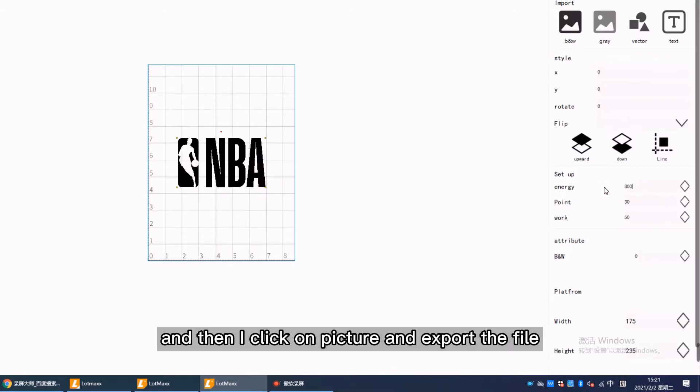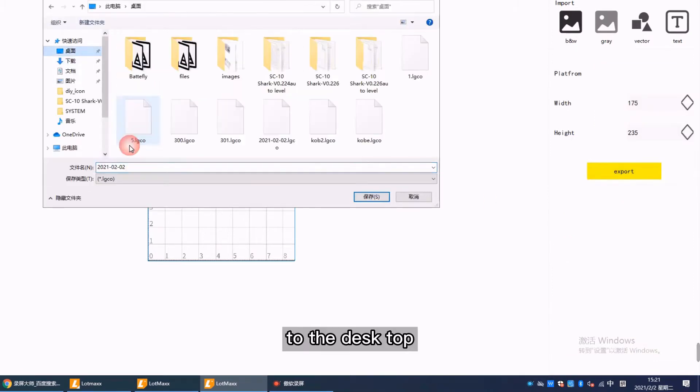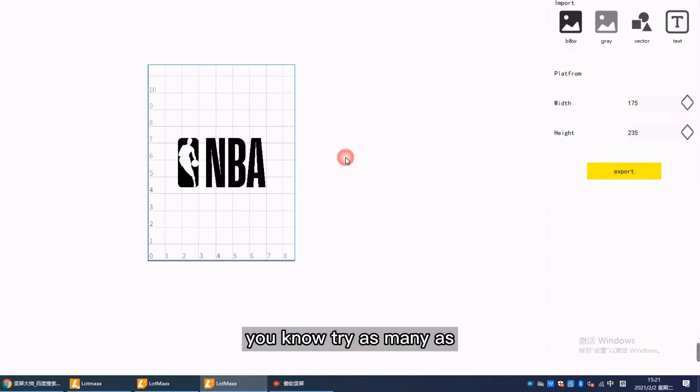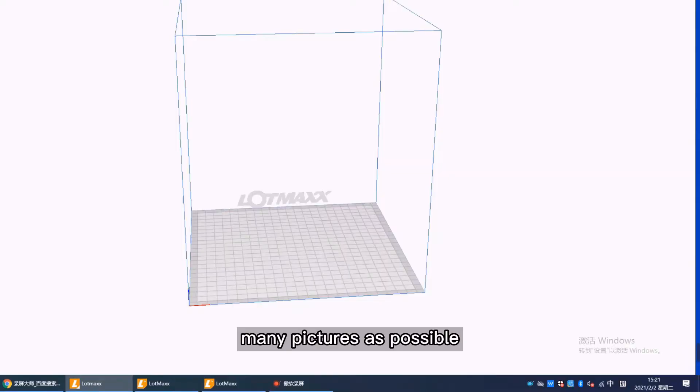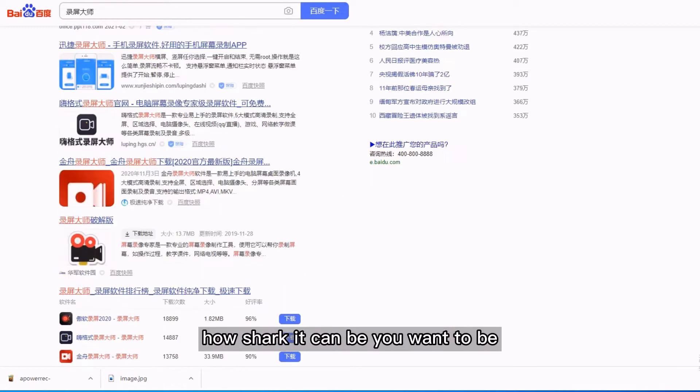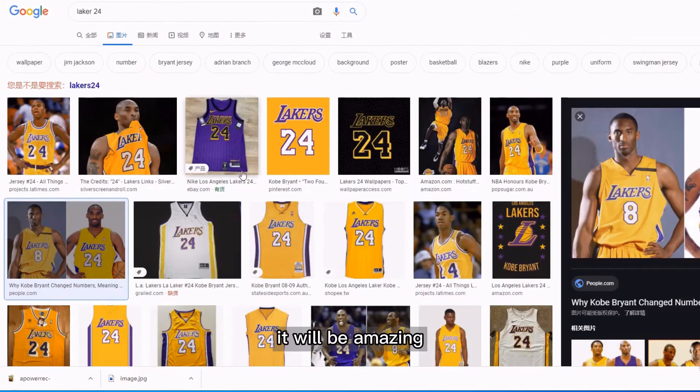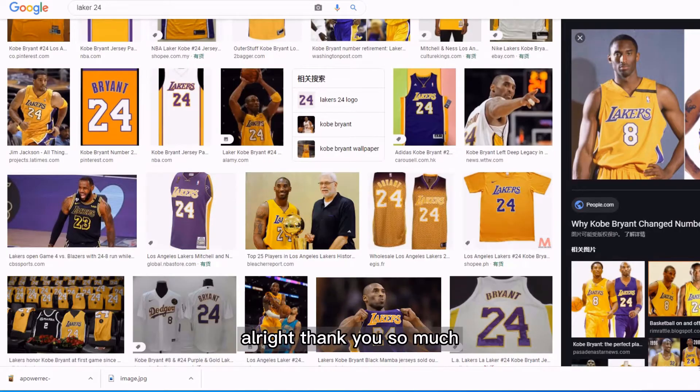Then I click on picture and export the file to the desktop. That's it, it's pretty simple. Try as many pictures as possible so you get some amazing results. Select the details and how sharp you want it to be. You can always check a lot of patterns on Google Pictures and everything. It will be amazing.